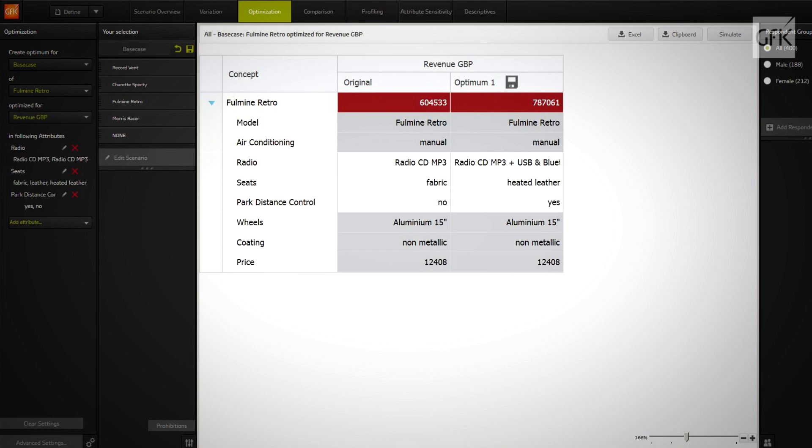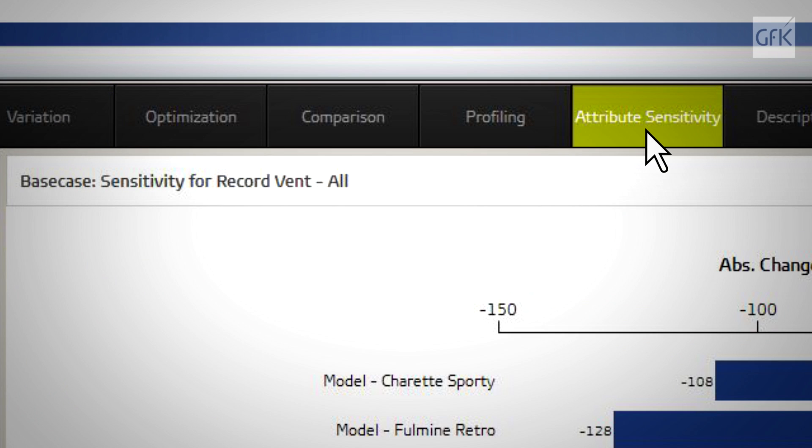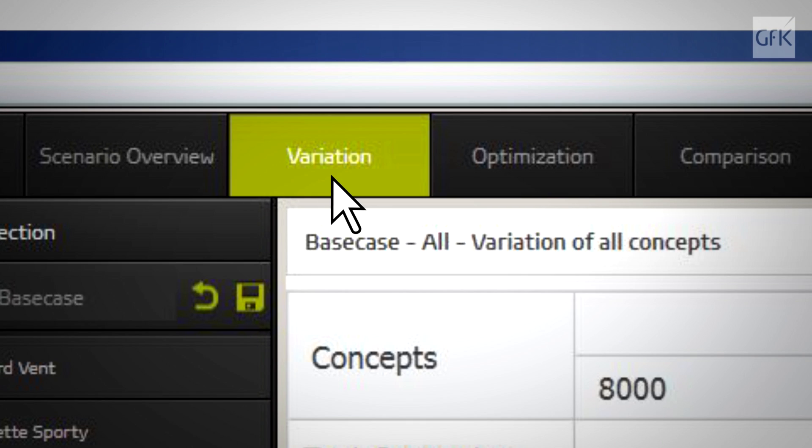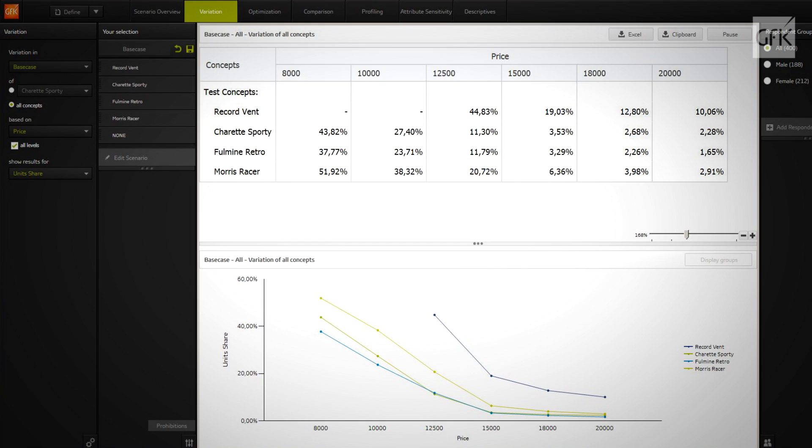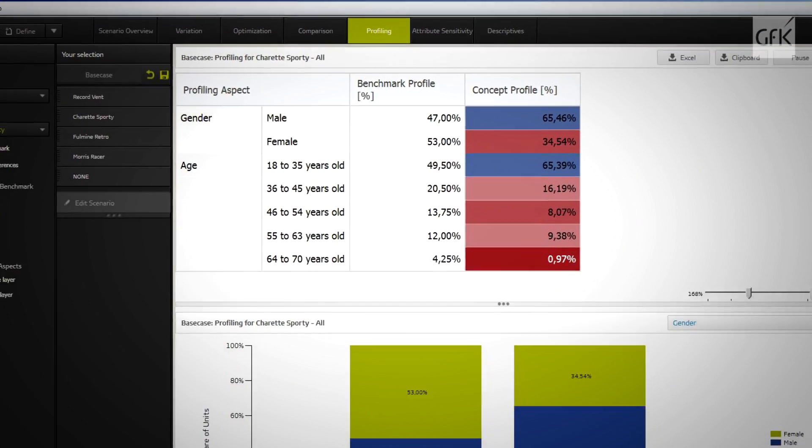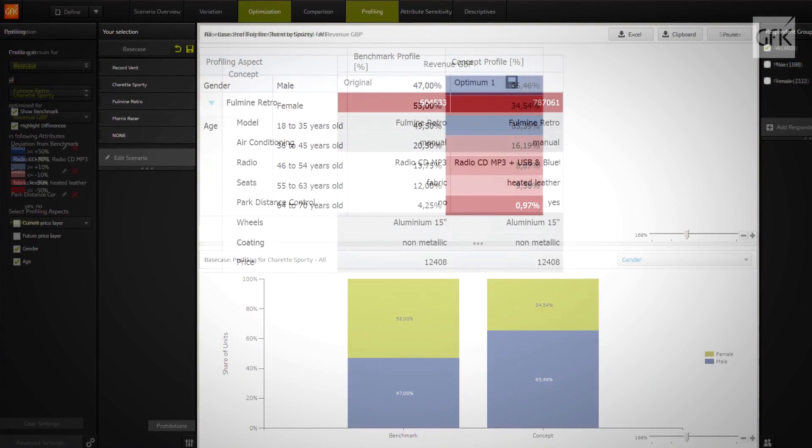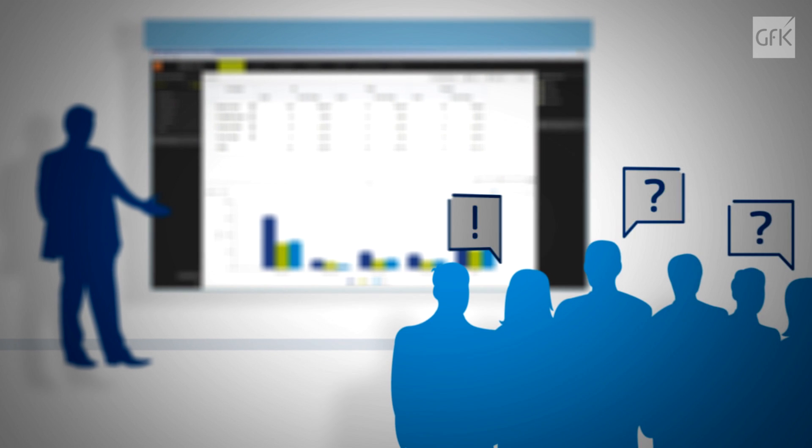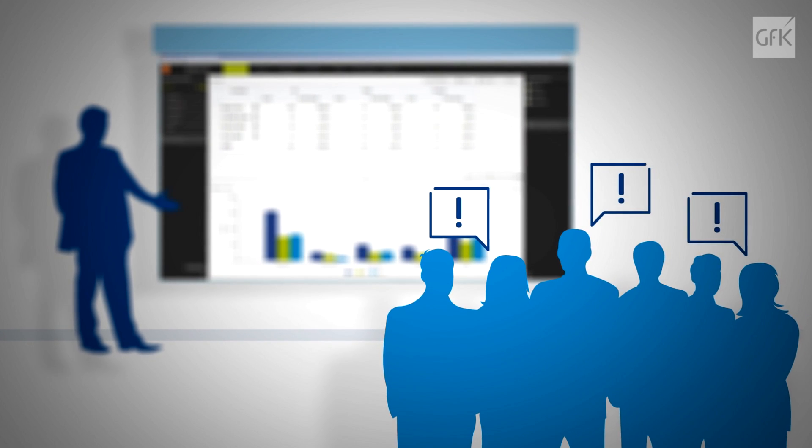Market Opportunity Simulator offers a wide variety of analytic options with easy access to concepts, scenarios, and respondent groups. The tool features a powerful engine specifically designed to let you optimize your offers. You can quickly create demand functions, identify critical price thresholds, and get buyer profiles.